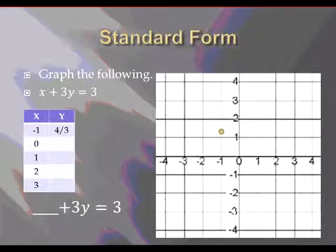We'll plug in 0. That makes the entire x term disappear. You get 3y equals 3. Divide both sides by 3. y is equal to 1. There's your point at 0 comma 1. If you plug in 1, you'll get 2 thirds and plot that point. Plug in 2, you'll get 1 third and plot that point. And if you plug in 3, you'll get a value of 0 and you can plot that point.